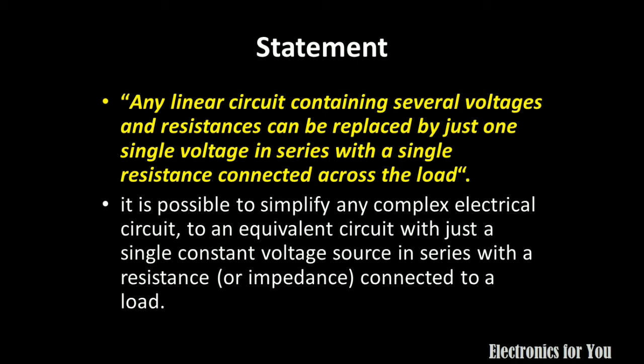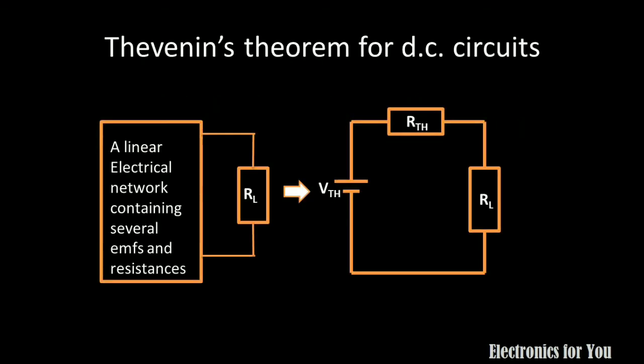by just one single voltage source in series with a single resistance connected across the load. It means we can replace any linear electrical network by a series resistance with the load and a constant voltage source. A linear electrical network containing several EMFs can be replaced by a voltage source, a series resistance, and the load resistance.